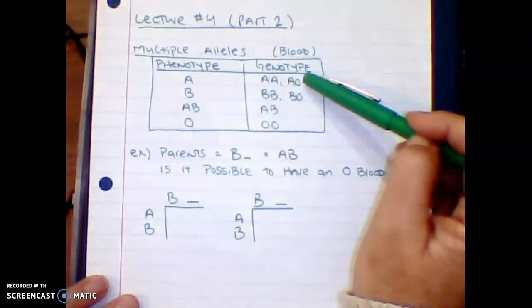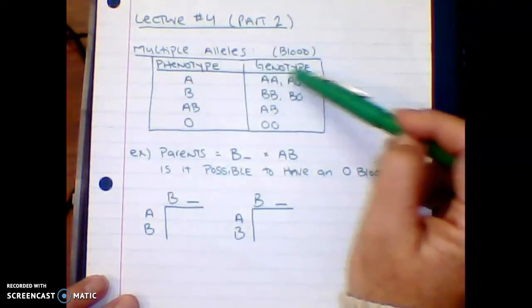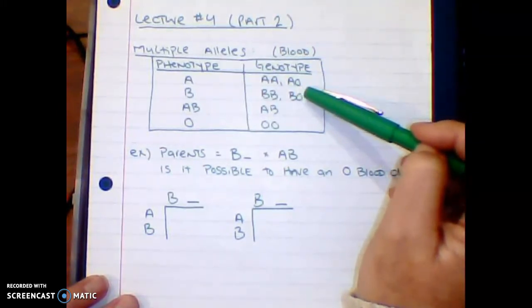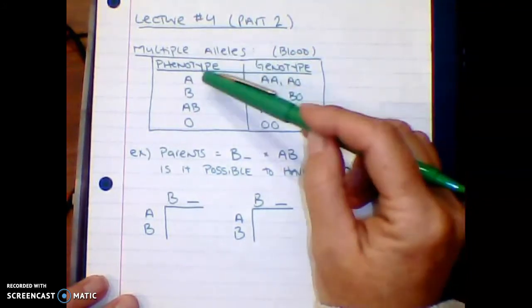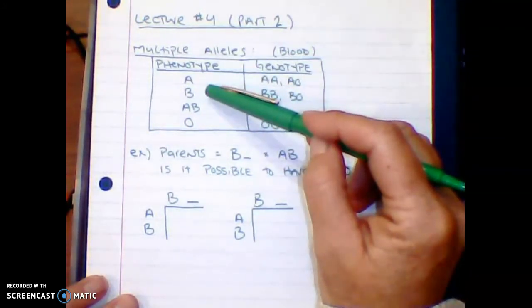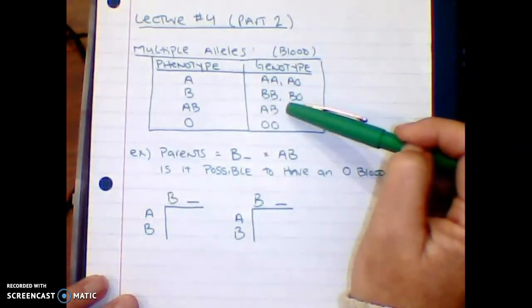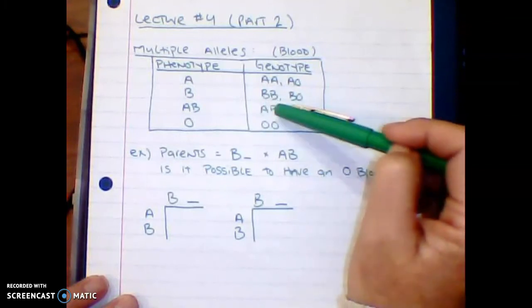Again, O is recessive, which is why both A and B have an O option. A blood and B blood are both dominant, but AB blood is considered co-dominant because you have both A and B blood.